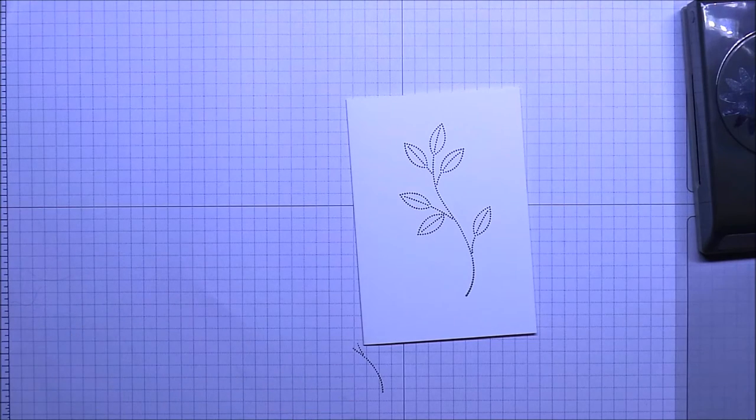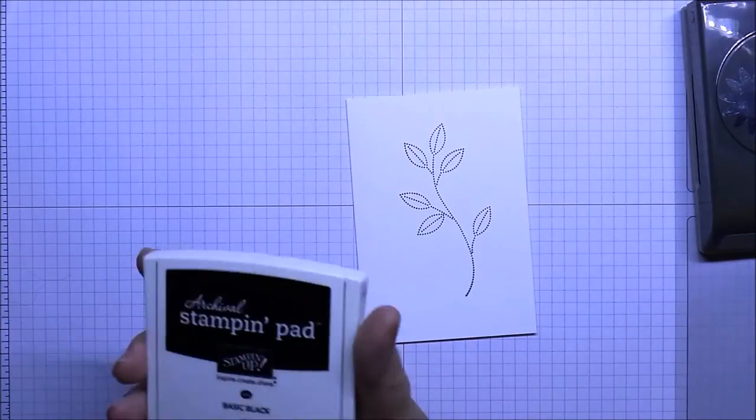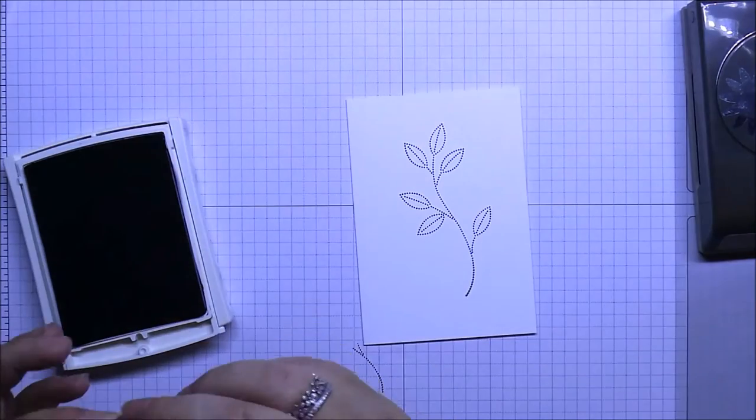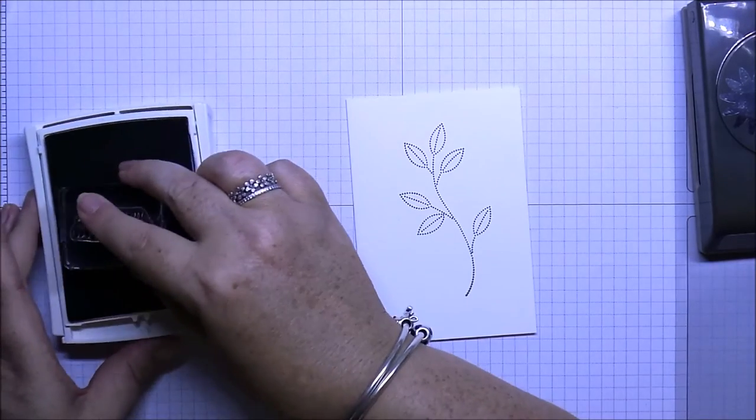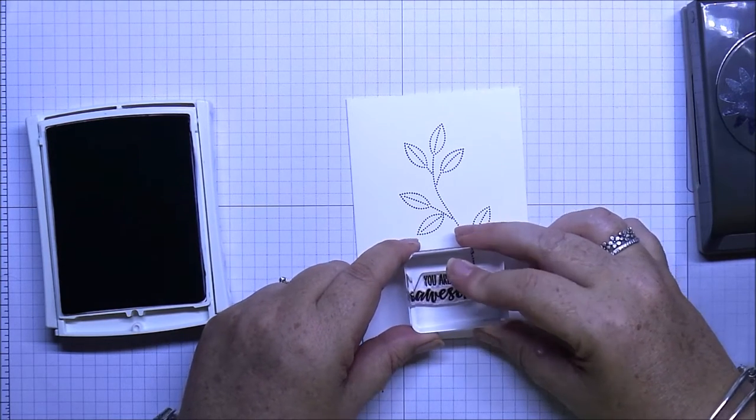I'll put this ink pad away and the other ink pad that we're using is the Basic Black Archival. Okay, so I'm just going to stamp—I'm going to turn the stamp the right way up—just a quick 'You are totally awesome.'